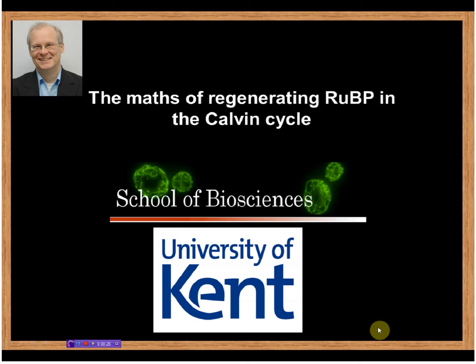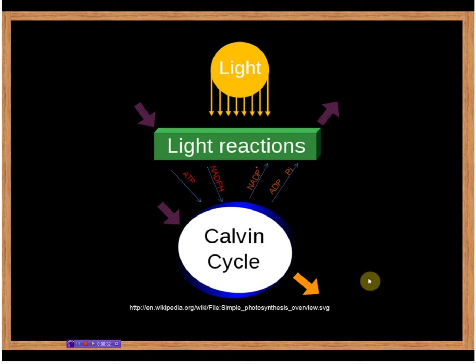So first of all, let's remind ourselves about the importance of the Calvin cycle. In the Calvin cycle we use products of the light reaction in photosynthesis—these products are ATP and NADPH—and in the Calvin cycle which happens in the stroma of the chloroplast,